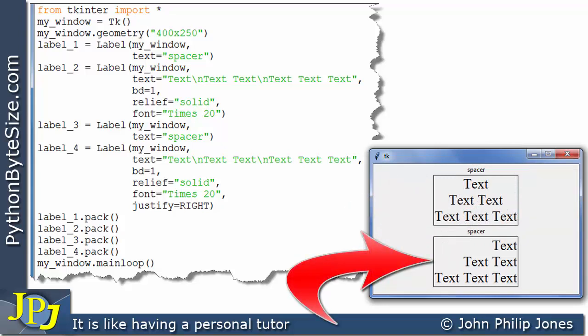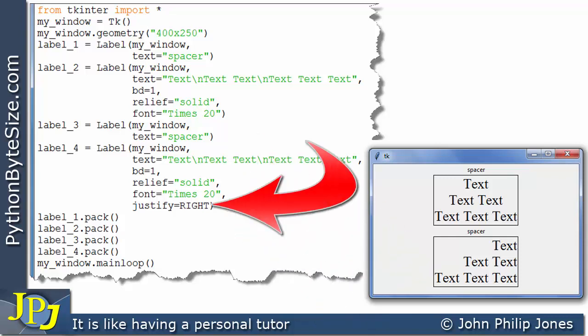If we come back to this label, the reason it is shifted to the right is because of this line of code here. We said justify is assigned RIGHT. That means justify the text being displayed, which is clearly the text that you can see in this label.